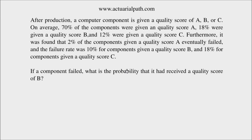2% of the components given a quality score of A eventually failed, and the failure rate was 10% for components given a quality score of B, and 18% for components given a quality score of C. If a component failed, what is the probability that it had received a quality score of B?